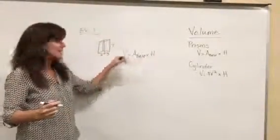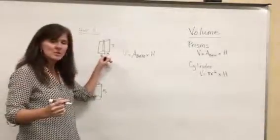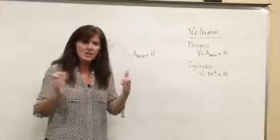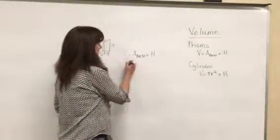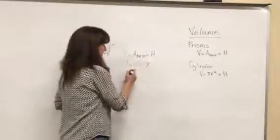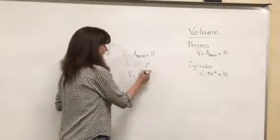What is the area of the base? Well, the dimensions are two times five. Area of a rectangle is length times width, so we're just going to multiply two times five, which is ten, times the height, which is seven, and our volume equals seventy.